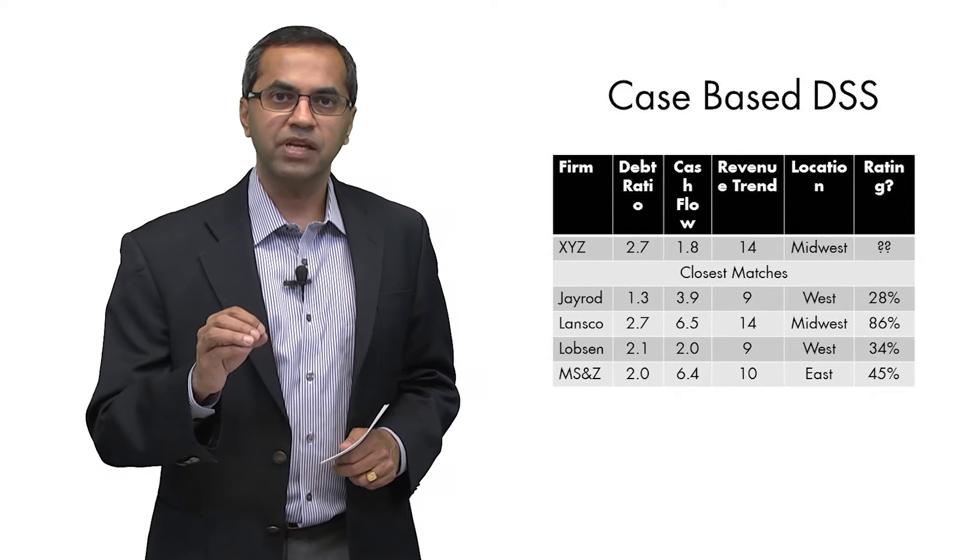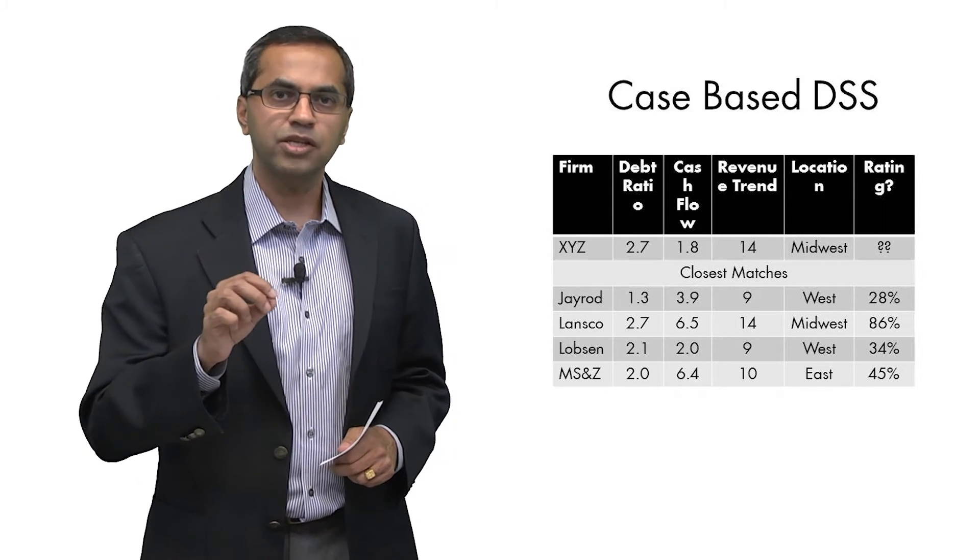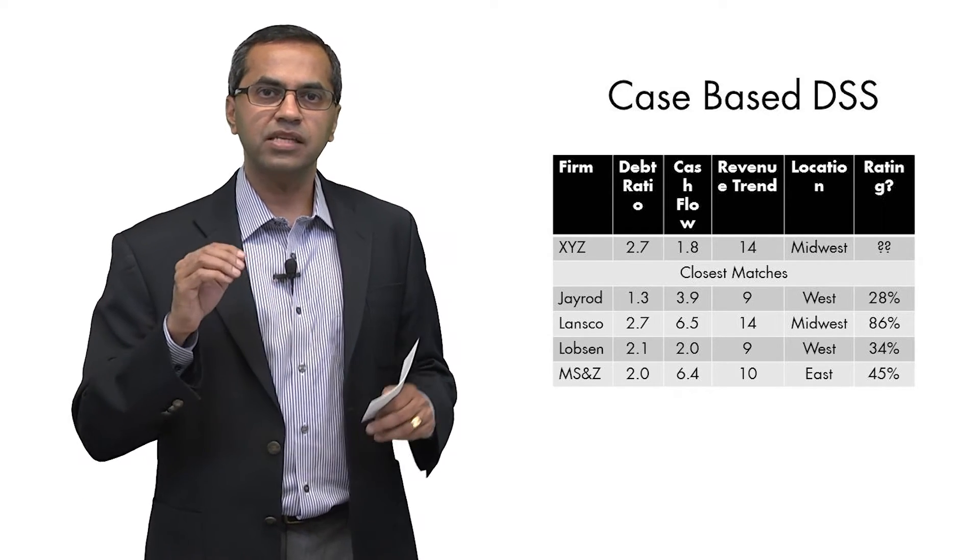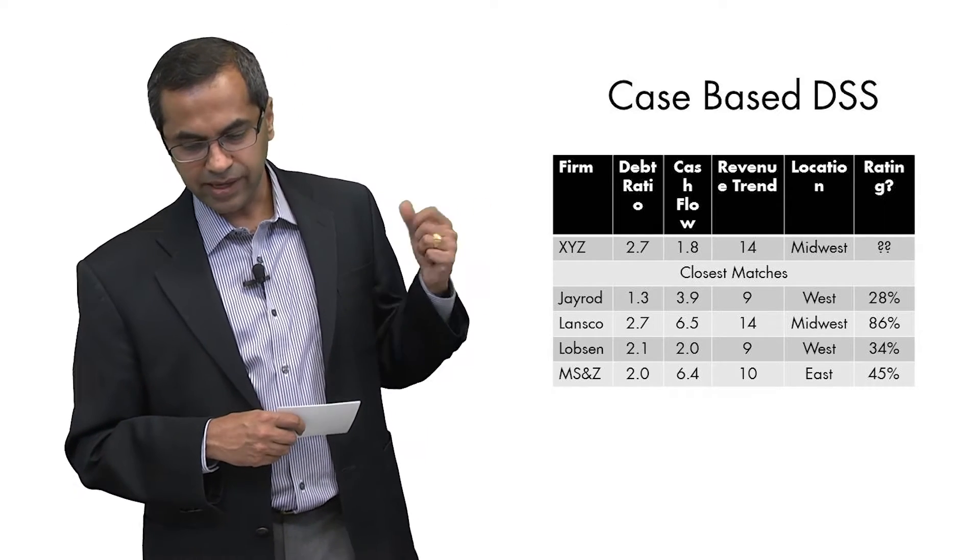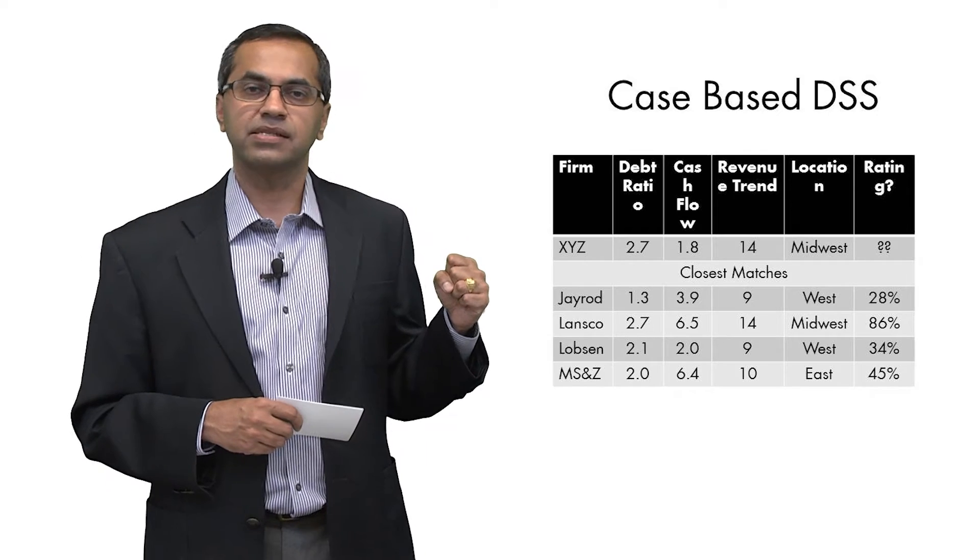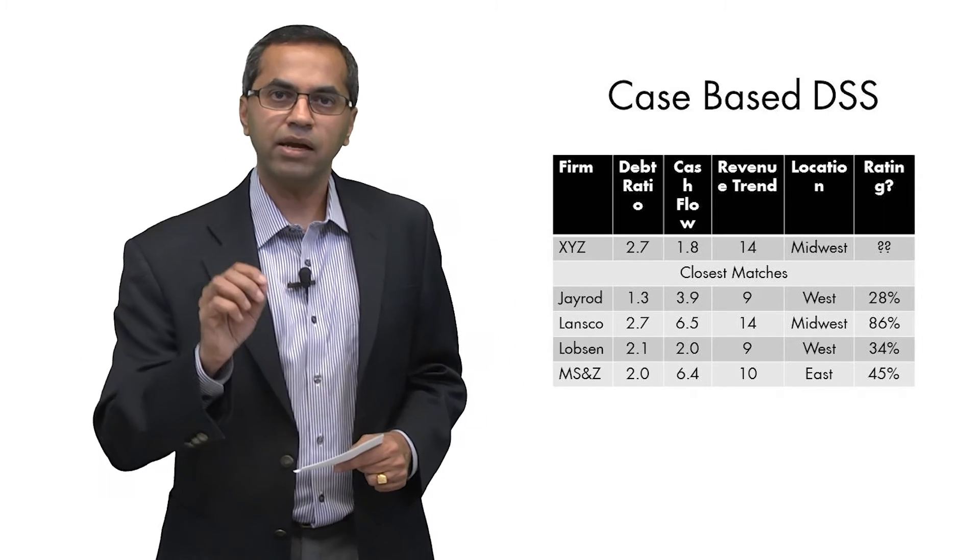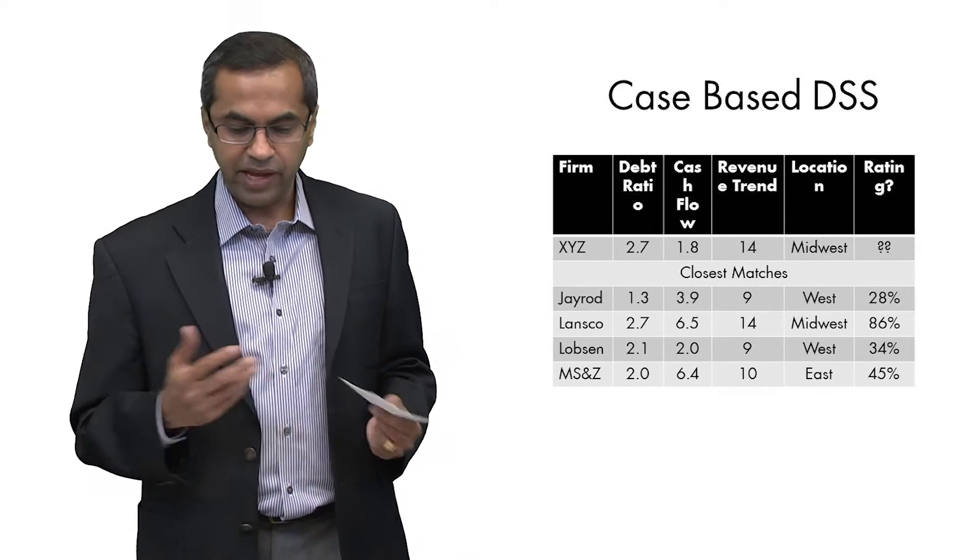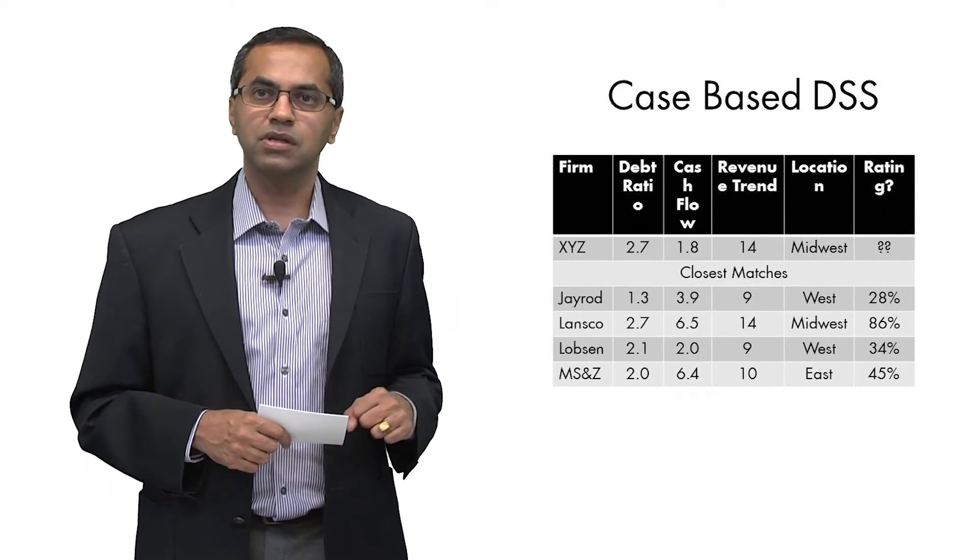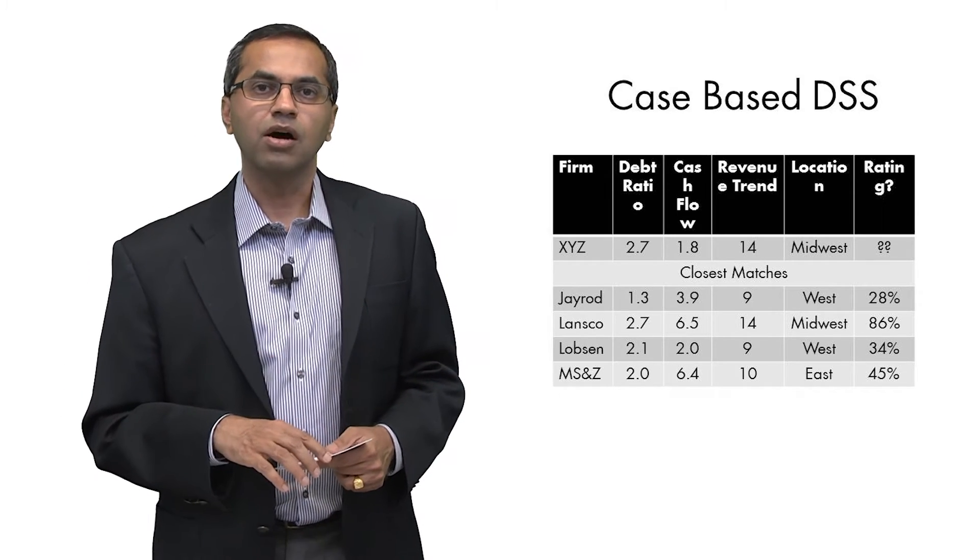The psychological process that we follow to make these kinds of judgments is called anchoring and adjustment. The DSS gives you a past case to anchor on. So let's say you decided that XYZ is most similar to MSNZ. So MSNZ had a score of 45. You're going to anchor on the 45 and you're going to make adjustments. You're going to say, well yeah, they had 45 but they were in the East Coast. This is a Midwestern company. How does that change your prediction of the score?